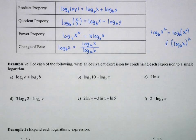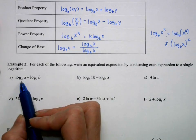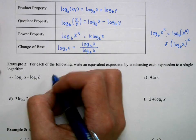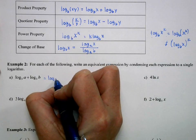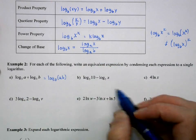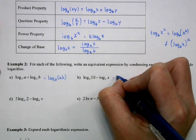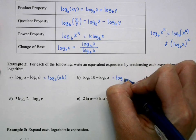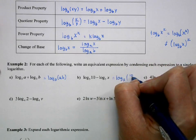Now I'm going to use those properties to rewrite some of our expressions. So using the product property, log base 3 of a plus log base 3 of b will be log base 3 of a times b. If we're subtracting, that becomes division. So log base 5 of 10 over x.